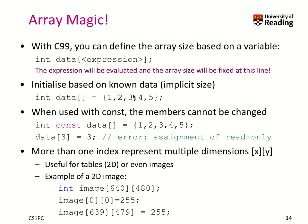We can also use an implicit size when we initialize an array, as long as we use the curly bracket notation on the right-hand side. Here we say data is an array but we don't specify it consists of 5 elements — the compiler knows how many elements by evaluating the right-hand side and counting that there are 5 elements.